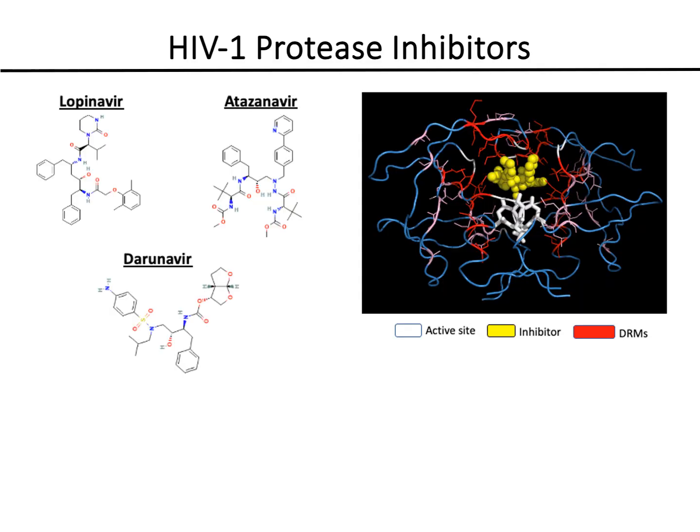There are three main protease inhibitors in current use. Lopinavir, co-formulated with the pharmacokinetic booster ritonavir. Atazanavir, which can be administered boosted with either ritonavir or cobicistat, and which is also approved for use without boosting. And darunavir, which can be boosted with either ritonavir or cobicistat.